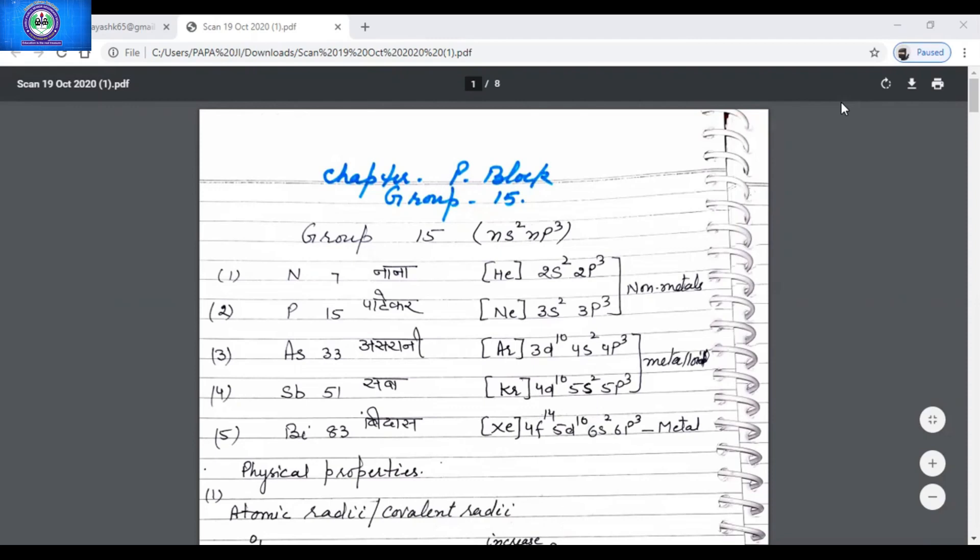The nitrogen family consists of nitrogen, phosphorus, arsenic, antimony, and bismuth. I have written one mnemonic: nana patikar ashrani sabindas. This way even you can learn the name of the elements of this group.